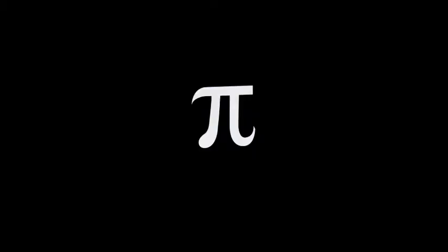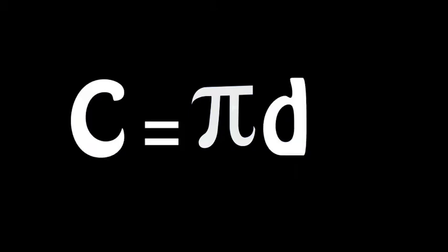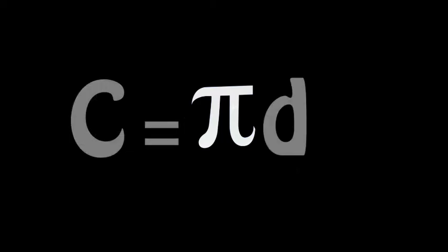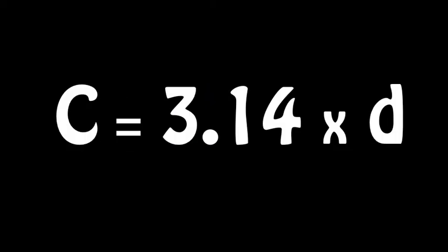In order to use PI to find the circumference of a circle, we need a formula. This formula is C equals PI times D. The C stands for circumference and the D stands for diameter. We also need to replace the symbol for PI with its value of 3.14. Now we're ready to use the formula.